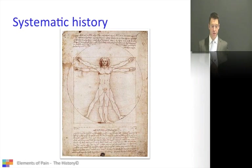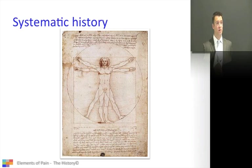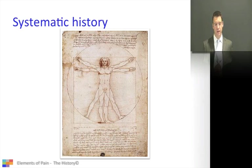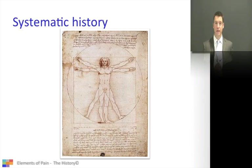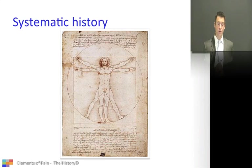Systemic history is important. For example, if you've got somebody taking high doses of opioids or benzodiazepines, this will have an effect on cognitive function, may affect mood, may affect libido. And of course opioids and renal dysfunction is something you may need to consider.